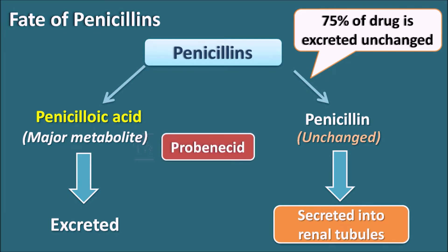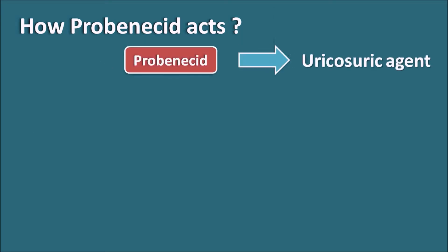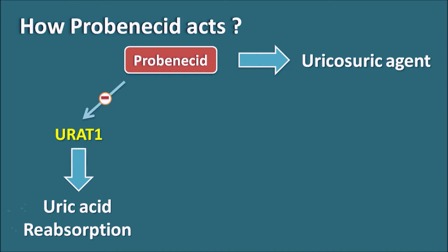Probenecid is a drug that inhibits this renal tubular secretion, thereby inhibiting the excretion of penicillins. Probenecid acts as a uricosuric agent, meaning it increases uric acid excretion. It inhibits the URAT-1 transporter, the urate transporter responsible for uric acid reabsorption within the renal tubules. As the URAT-1 pump is inhibited, uric acid reabsorption is inhibited by Probenecid.